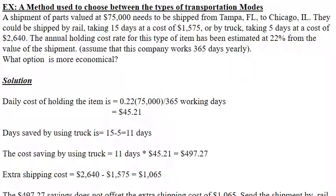A problem example: a shipment of parts valued at $7,500 needs to be shipped from Tampa to Chicago. It could be shipped by rail, taking 15 days at a cost of $1,575, or by truck, taking 5 days at a cost of $2,640.